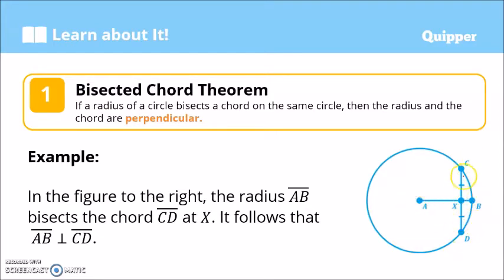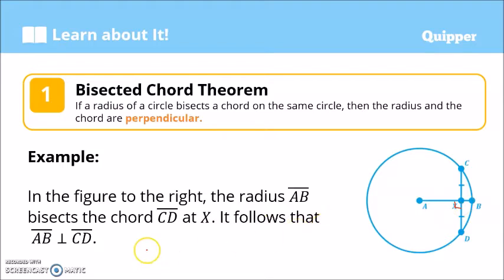When we say bisect, it means the radius divides the chord into two equal parts. Based on the Bisected Chord Theorem, this radius and chord are perpendicular, meaning the angle formed here is 90 degrees. In symbols, segment AB is the radius, segment CD is the chord, and it bisects at point X — so segment AB is perpendicular to segment CD.